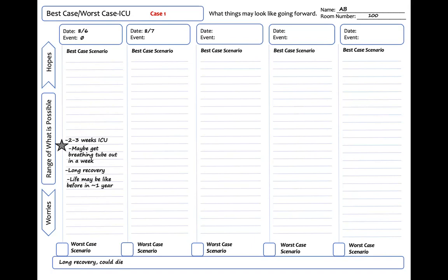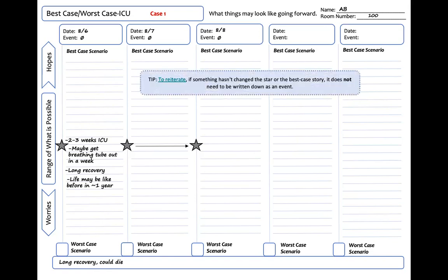When we're rounding on 8-7, we note she was stable yesterday without significant events, so I write a zero for the event and place the star in the same position. Rounding on August 8th, we note she went back to the OR yesterday for abthera exchange. I write a zero for the event and place the star in the same position. You might want to write 'surgery went well' for the event on 8-8, but I don't because we have described this before and things are going according to plan — there is nothing new. I draw an arrow across from 8-7 to 8-8 to indicate no change. To reiterate, if something hasn't changed the star or best case story, it does not need to be written down as an event.